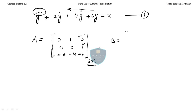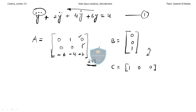B will always be [0, 0, 1] transpose, and C will always be [1, 0, 0]. These two are interchangeable — you can take B as [1, 0, 0] and C as [0, 0, 1] — but prefer B equals [0, 0, 1] and C equals [1, 0, 0]. You only need to find A. Let me take another example to make it clearer.